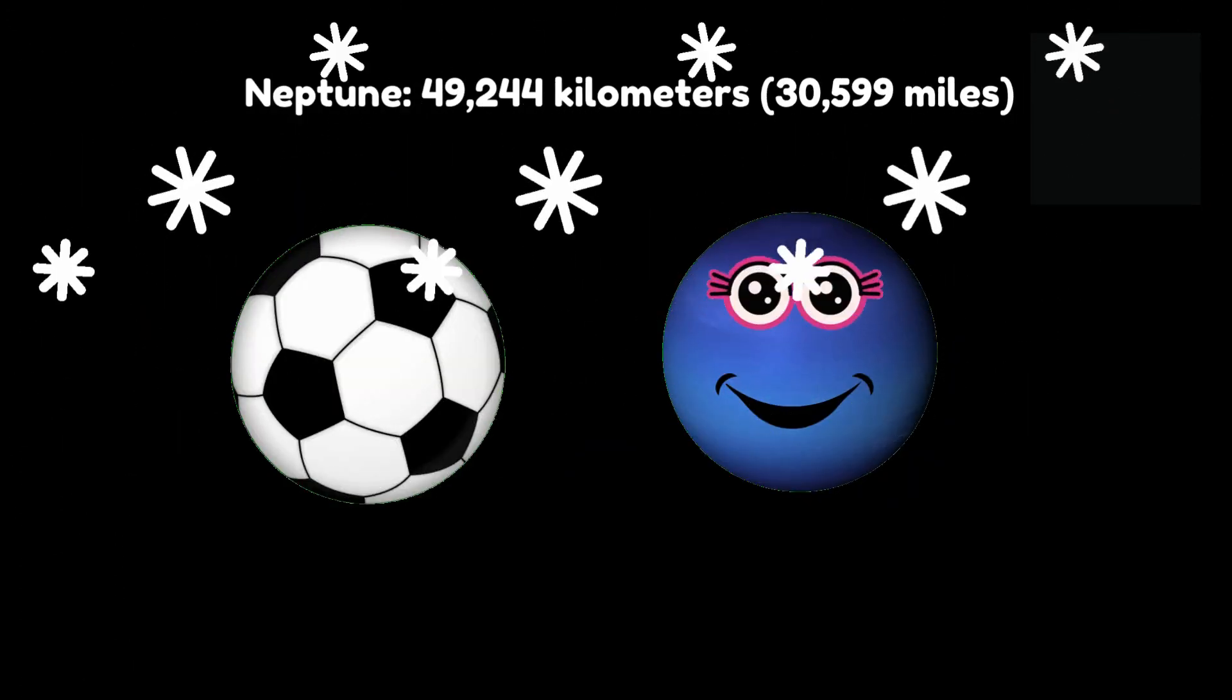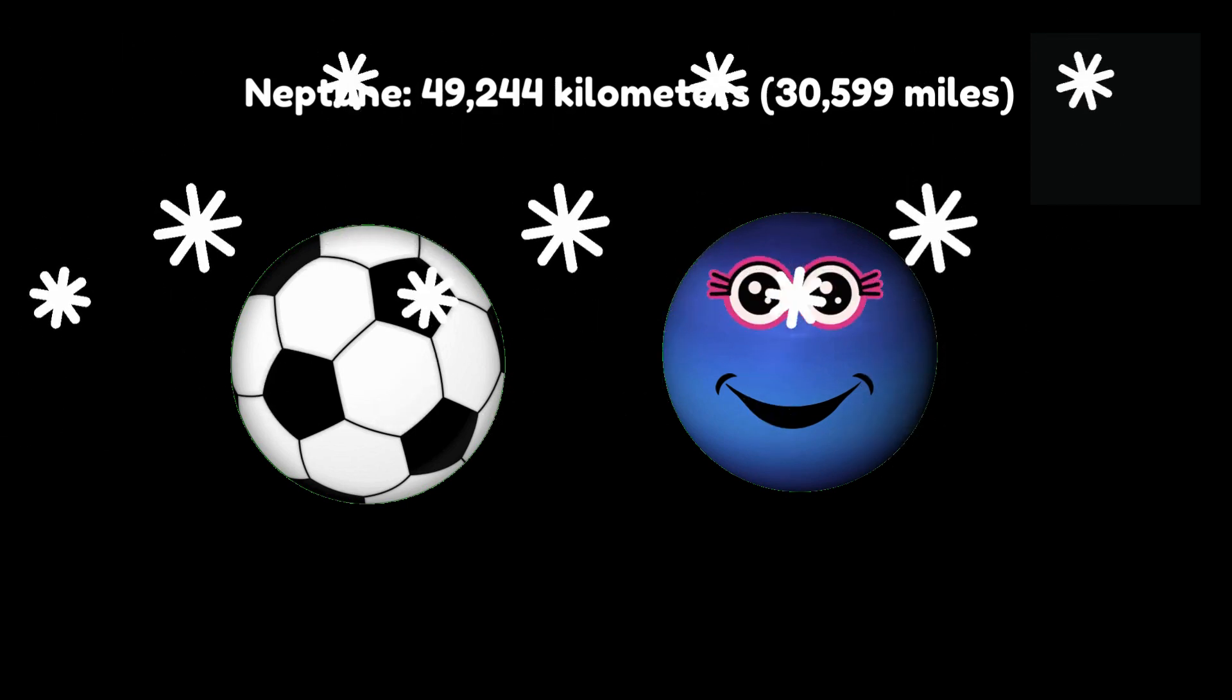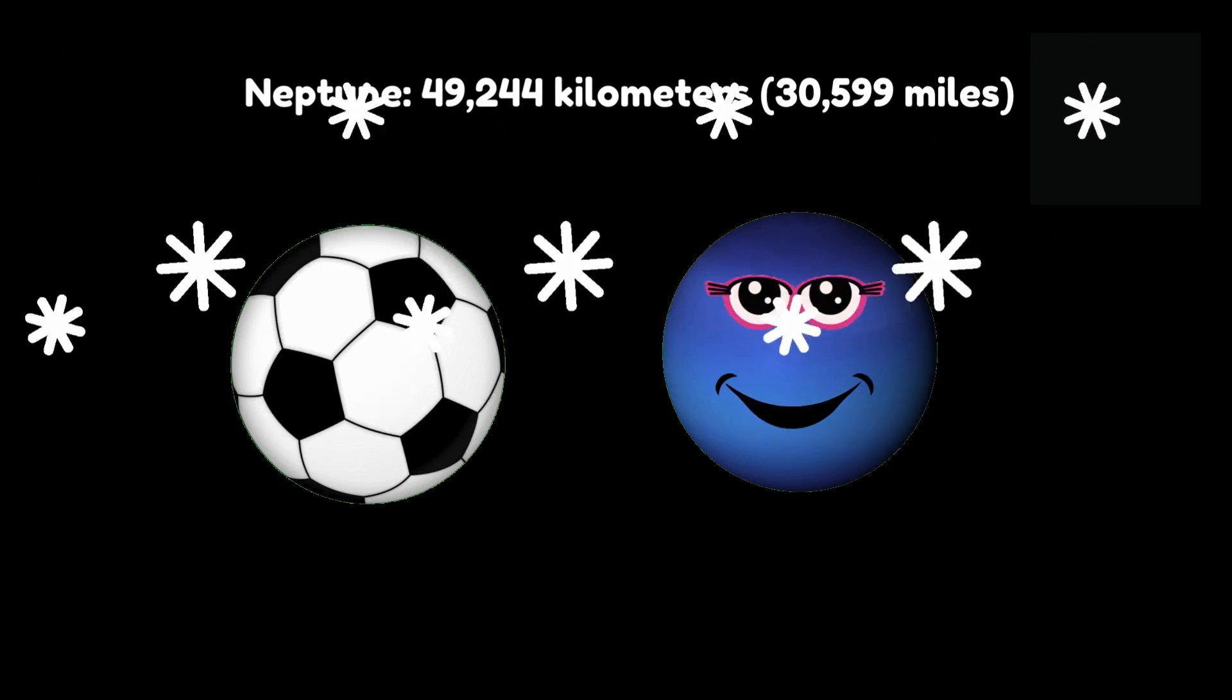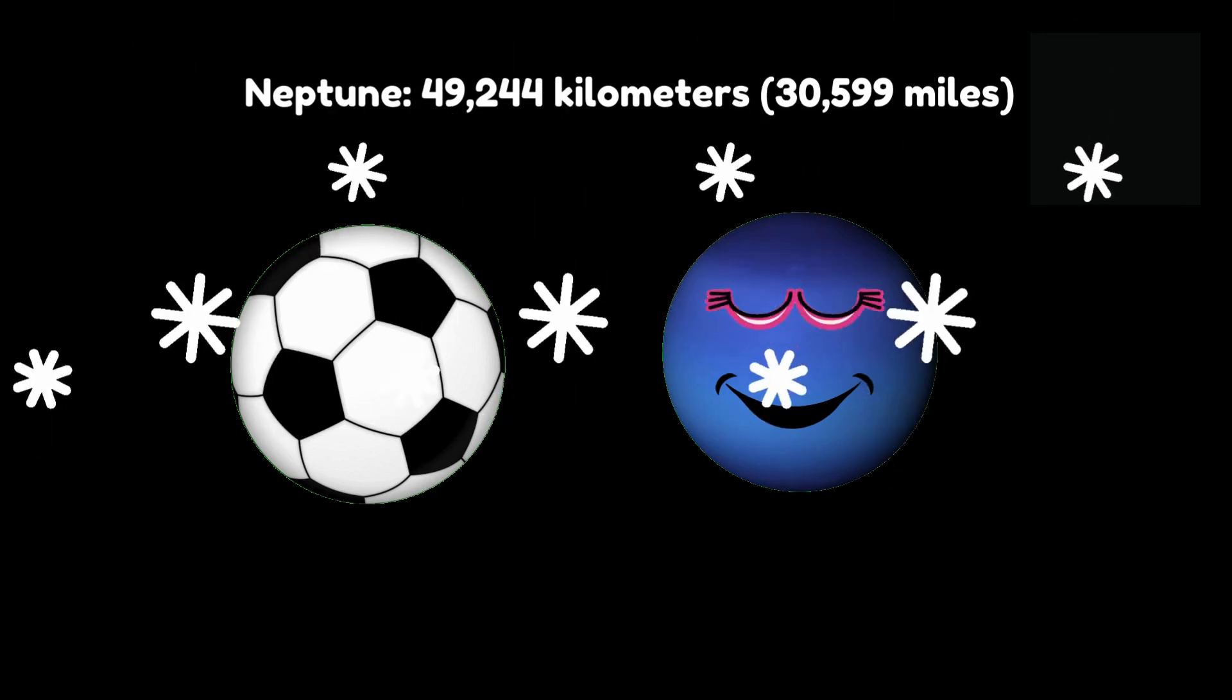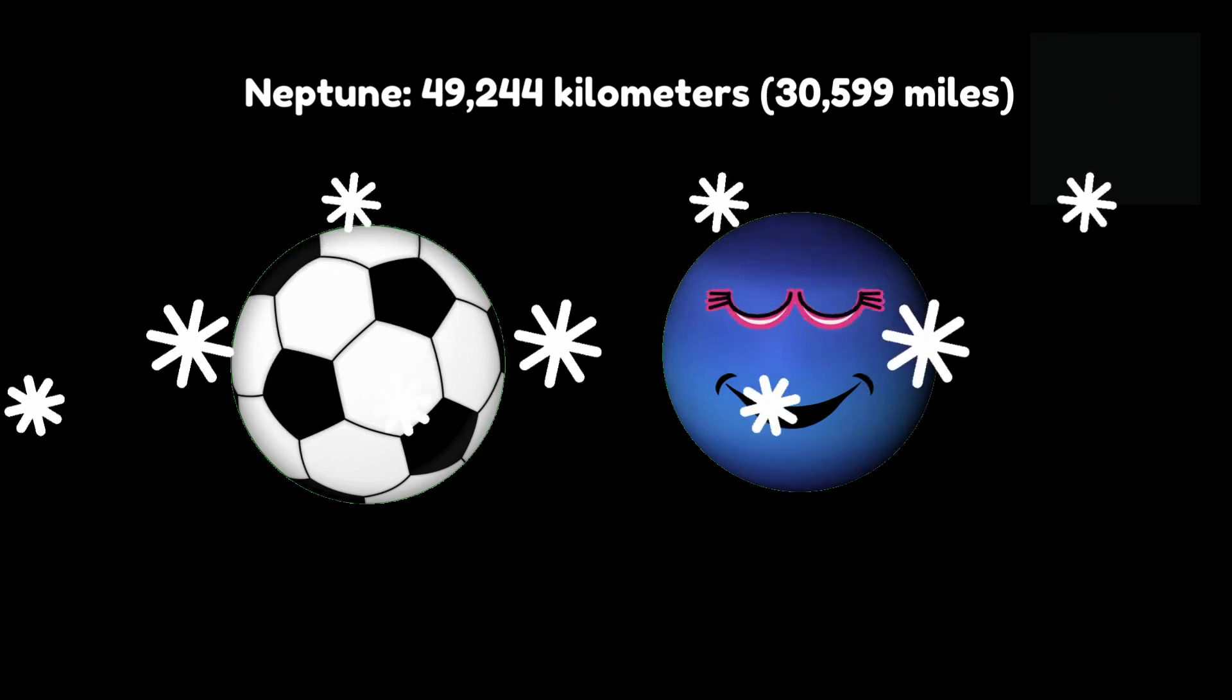Last but not least, Neptune. Our distant neighbor is a bit smaller than a soccer ball. It's like the goalie of the solar system guarding the outer reaches.